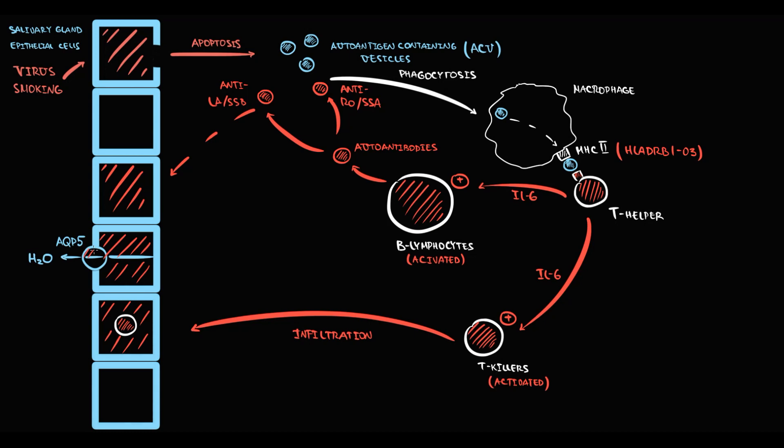The lower the amount of epithelial cells, the lower the secretion of fluid by the salivary gland, and this will cause dry mouth. Also, such strong activation of B lymphocytes inhibits their apoptosis and overstimulates their proliferation. As a result, in the long-term perspective, non-Hodgkin lymphoma can form — usually a MALT lymphoma of the affected gland, for example, MALT lymphoma of the salivary gland.